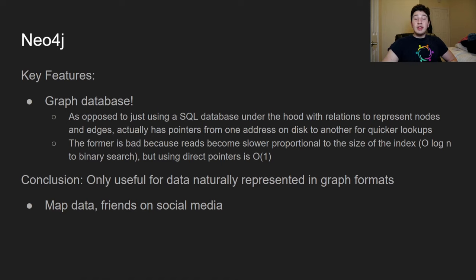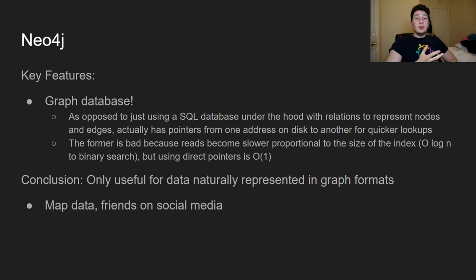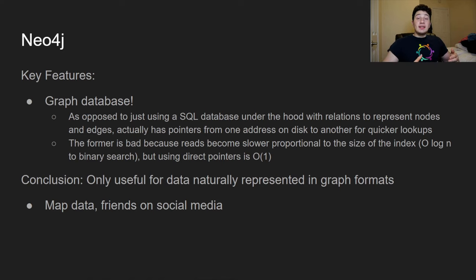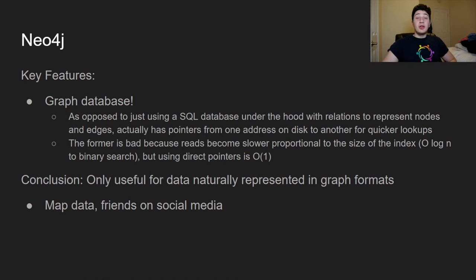Neo4j is a graph database. If you tried to implement a graph with a SQL database you'd use a many-to-many relationship table, but as that table grows, the index grows and read complexity scales as O(log n) per edge traversal, making it progressively slower. Neo4j is a native graph database, meaning it stores actual pointers to the disk locations of neighboring nodes, so you can traverse edges in constant time rather than doing logarithmic work every time you traverse a node.